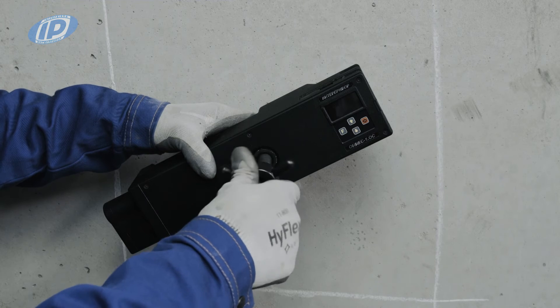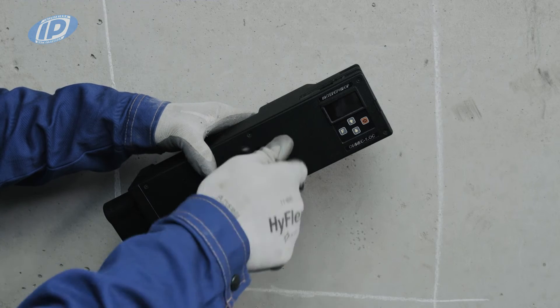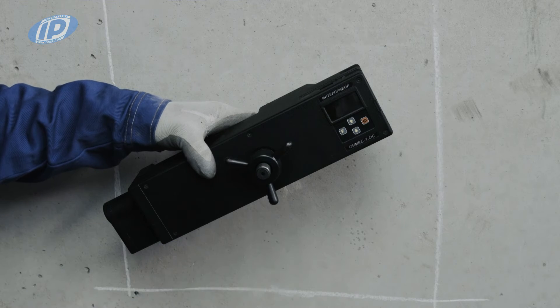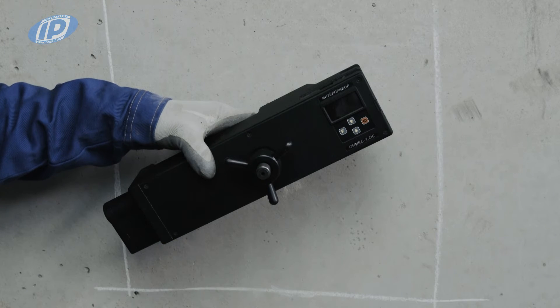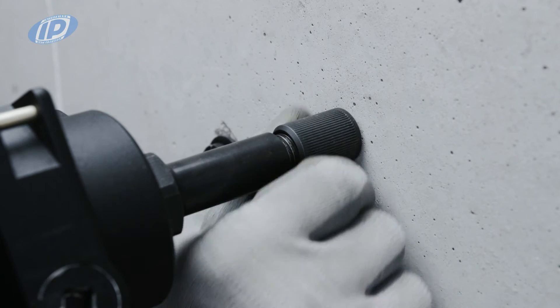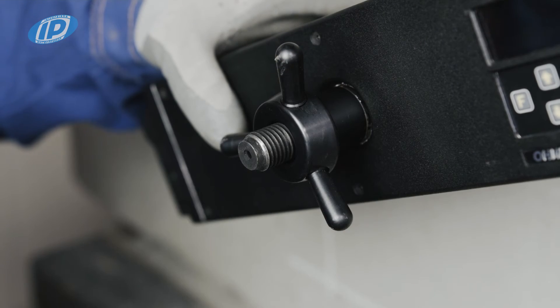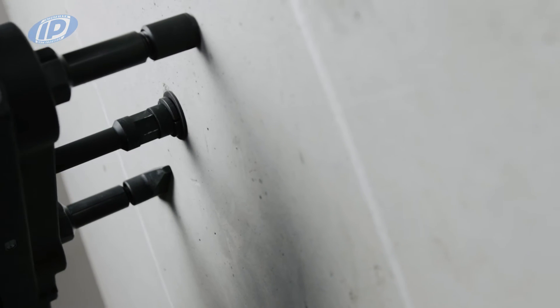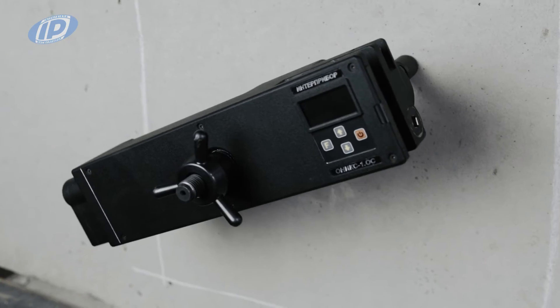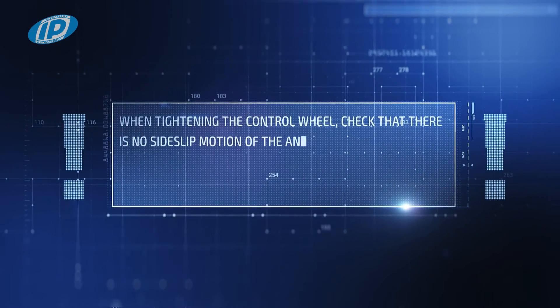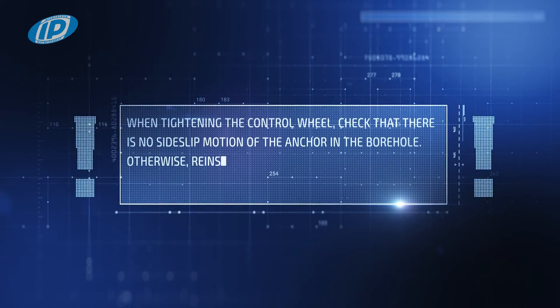Screw the control wheel onto the threaded end of the draw spindle, leaving a gap between the butt end of the control wheel and the body frame. The gap should approximately correspond to half of a turn of the control wheel. Unscrew the cylindrical support until it contacts the concrete surface. Hand tighten the control wheel, creating a preliminary tension of the draw spindle with the anchor necessary to ensure a reliable fixation of the press on the concrete surface at three control points. When tightening the control wheel, check that there is no side slip motion of the anchor in the borehole, otherwise reinstall the anchor.